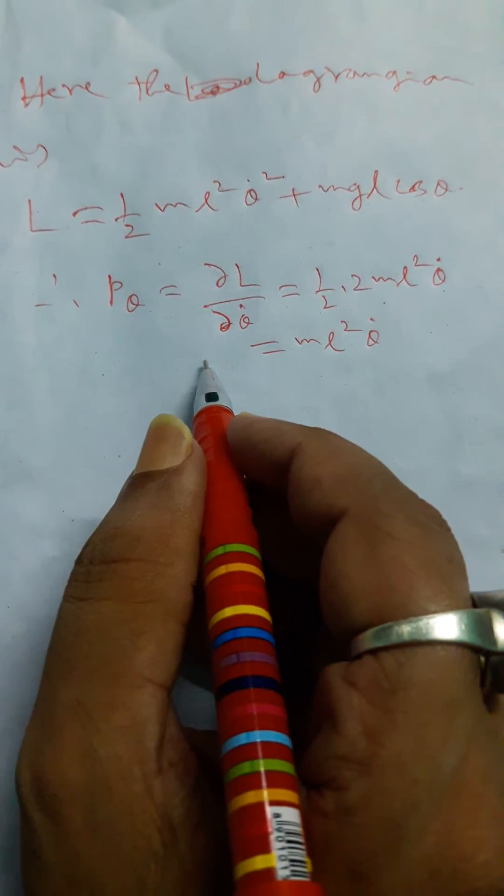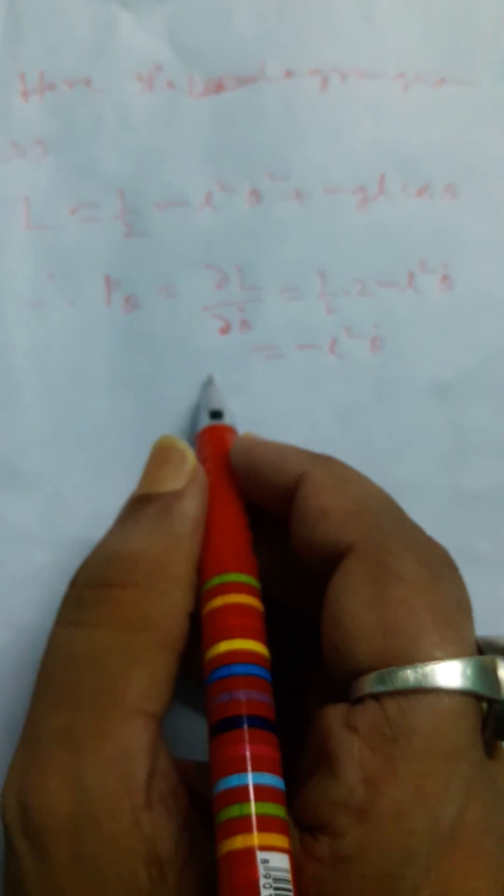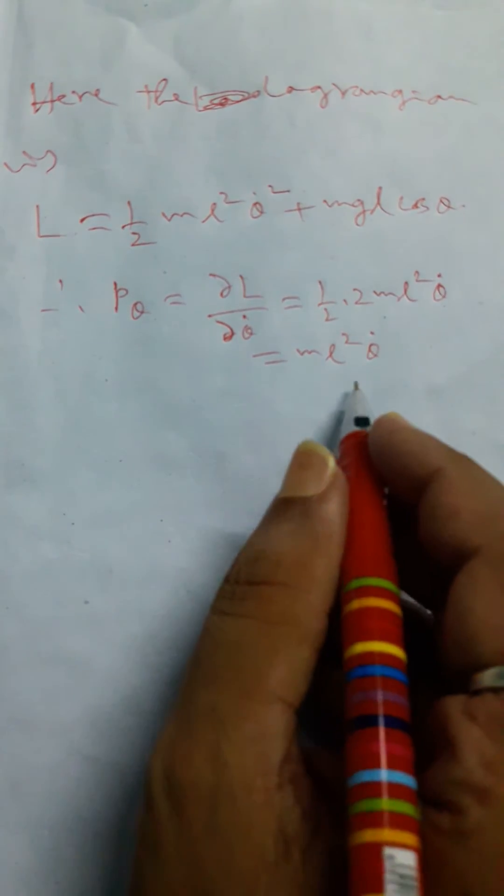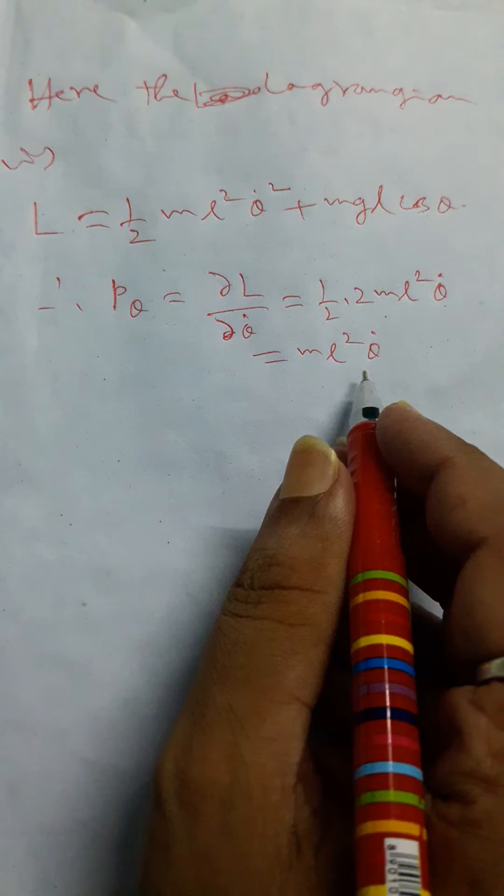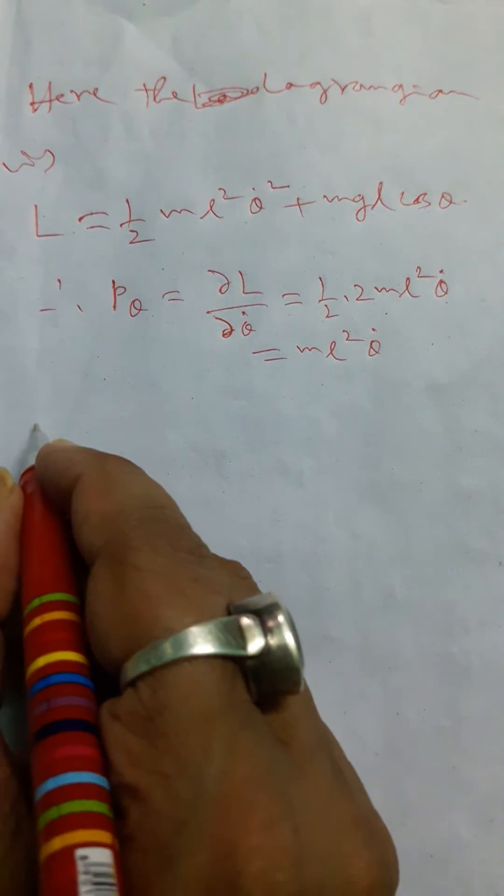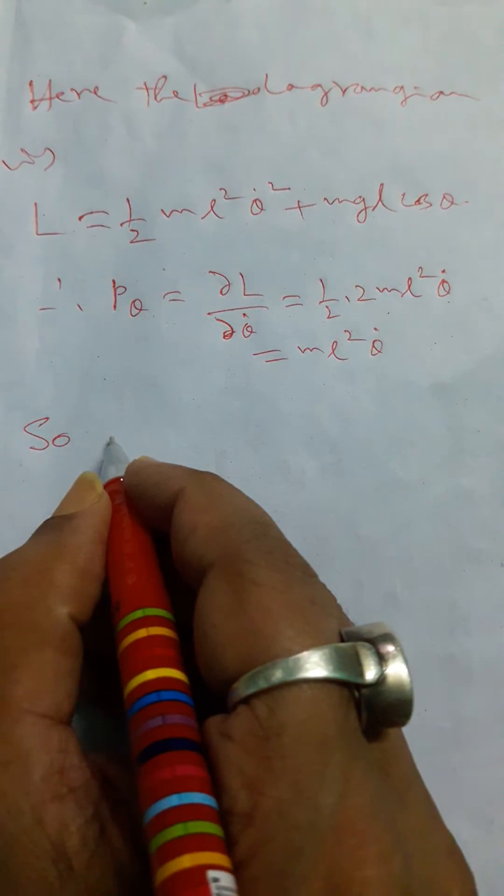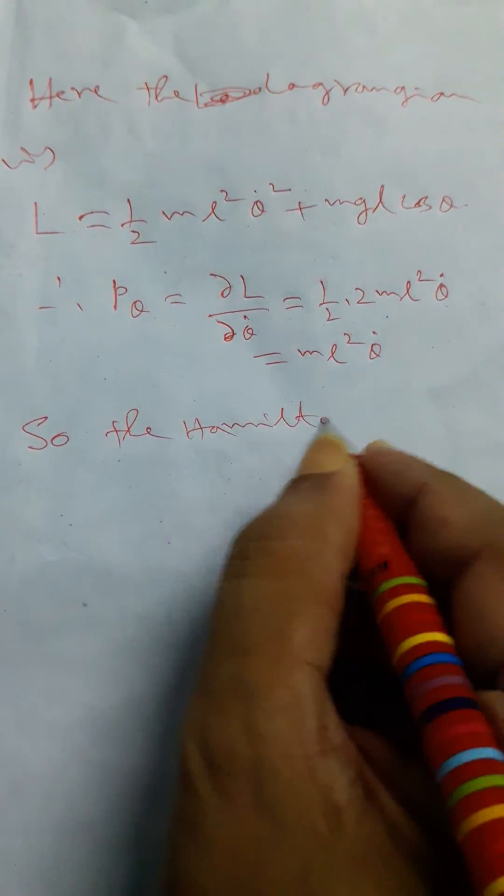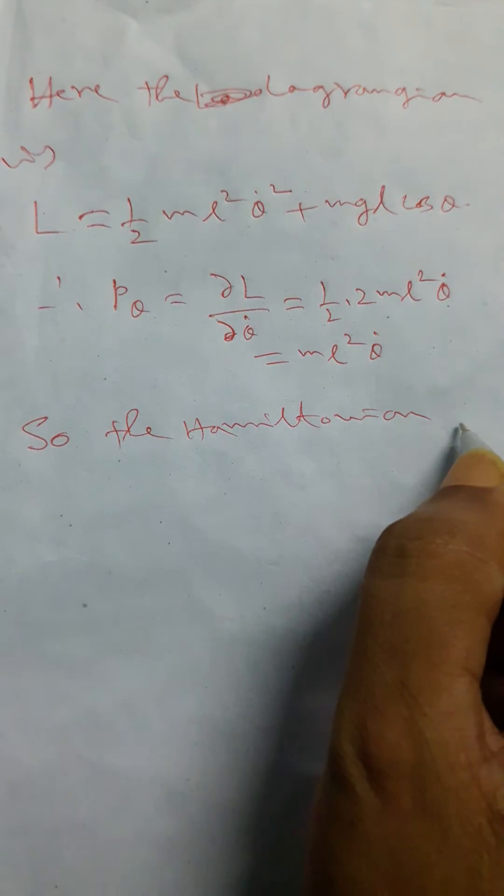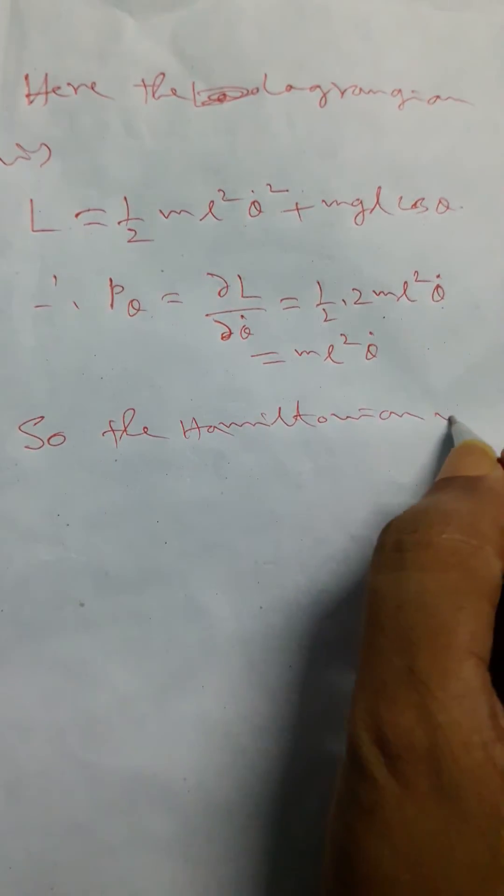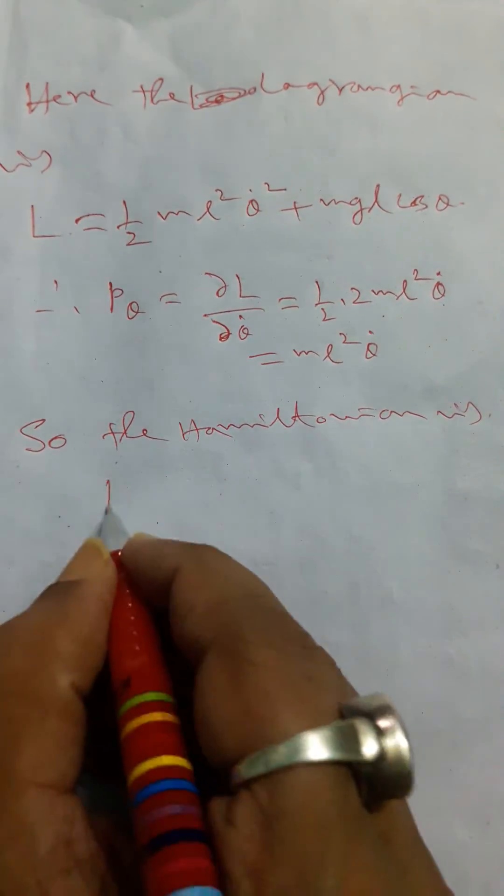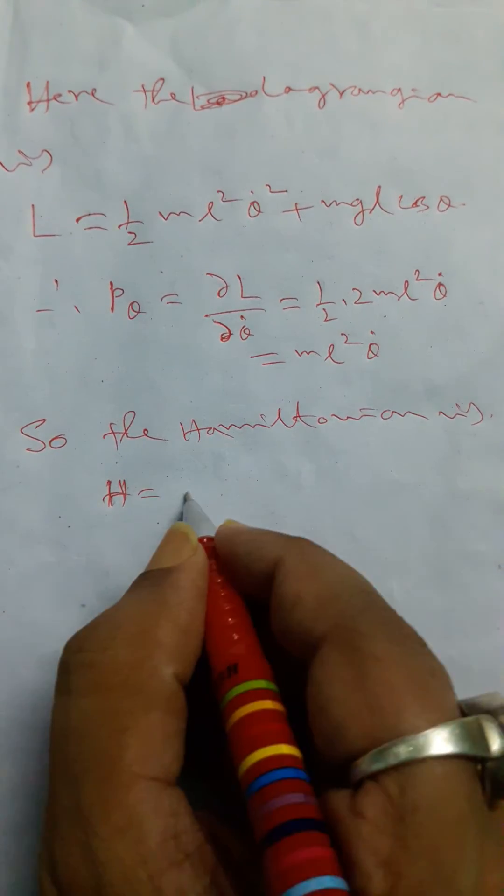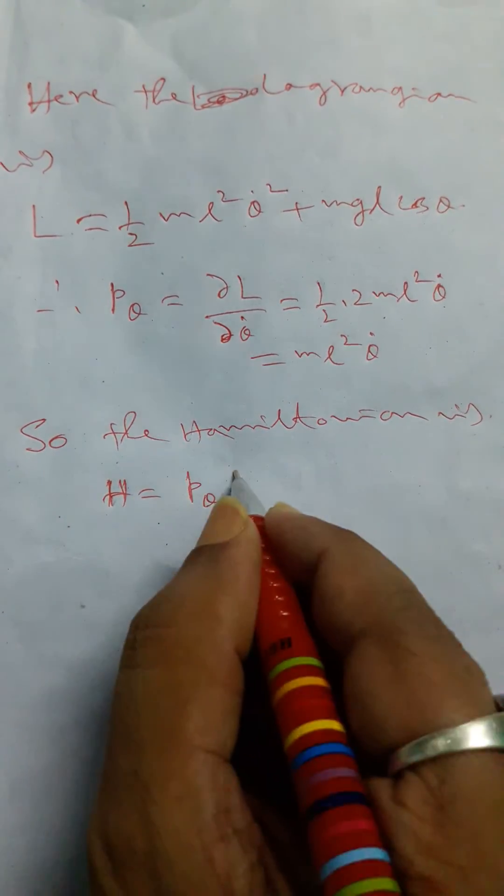Therefore, we finally find the Hamiltonian. What the Hamiltonian is will be: Hamiltonian H equals P_θ times θ̇.